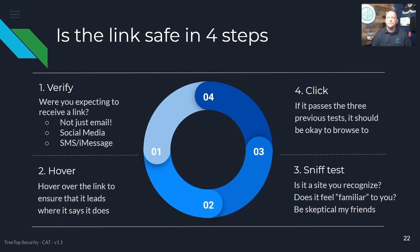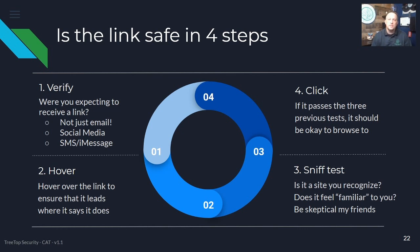There are four steps when making sure a link is valid. The important thing to remember is that we're not just talking about email — links can also come through social media if your friend gets hacked, or via SMS and iMessage. We're going to verify the link by hovering, give it a sniff test — take a step back and think about whether this is something you should be doing — and then lastly, if all of those things check out, you can go ahead and click on it.